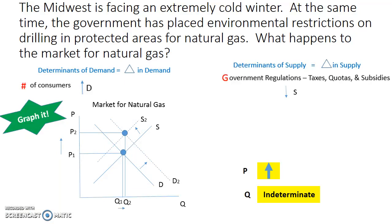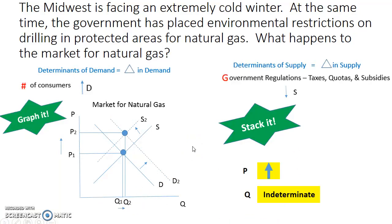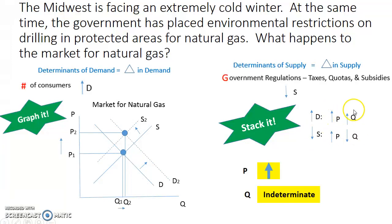Another way to think about this, instead of relying on the graph, is to stack it. You list what's happening with price and quantity for each shift. An increase in demand causes an increase in price and an increase in quantity. A decrease in supply causes an increase in price and a decrease in quantity. So it doesn't matter which curve shifts more — price is always going to go up. What is dependent upon the magnitude of the shift is the direction quantity is going, and that is why quantity is indeterminate.